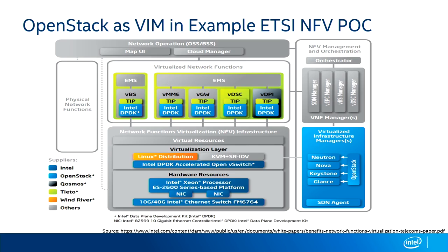In order for this to be useful, we've got to have an interesting application or collection of applications running on top of that. In the communications space, those would be things like virtual gateways, MMEs inside the mobility management element environment, deep packet inspection, or border gateway types of functionalities. Those applications can be single applications or a collection of multiple processes, and would have an element management aspect providing consolidation of information about the functionality of that application back across to the VNF manager.